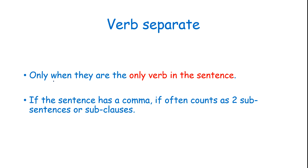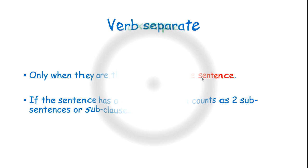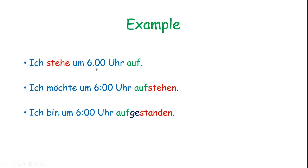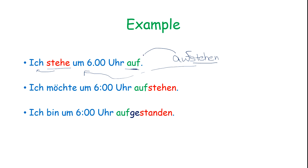Verbs separate only when they are the only verb in the sentence — that is the main verb. We separate it then. If the sentence has a comma, it often counts as two sub-sentences or sub-clauses. So when there is only one verb, we only change that. Like, check the example: 'Ich stehe um sechs Uhr auf.' There is only one verb, that is 'aufstehen'. We put 'stehe' conjugated with the subject in second position, and 'auf' goes at the end.